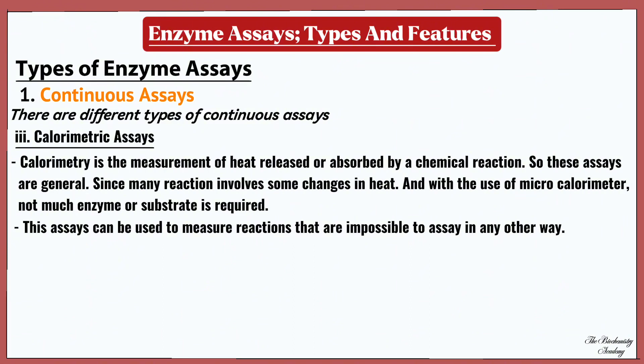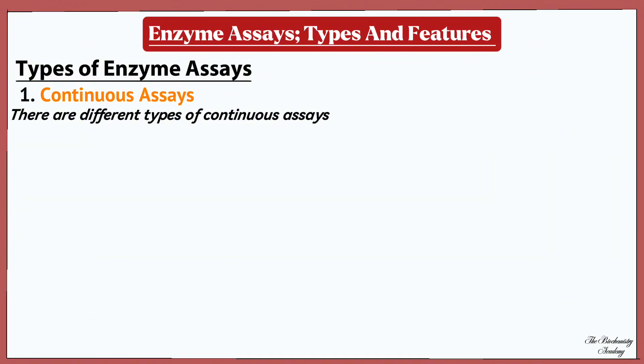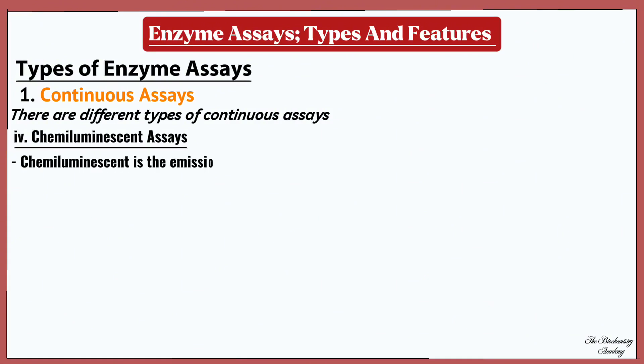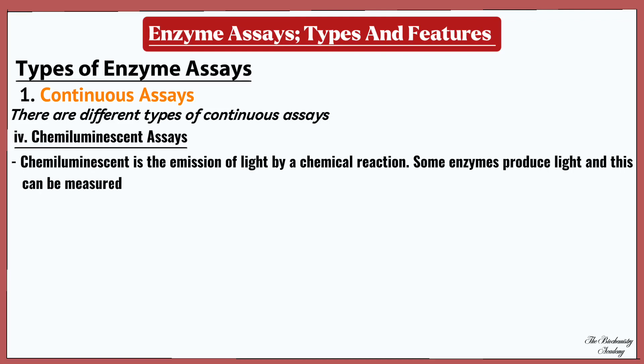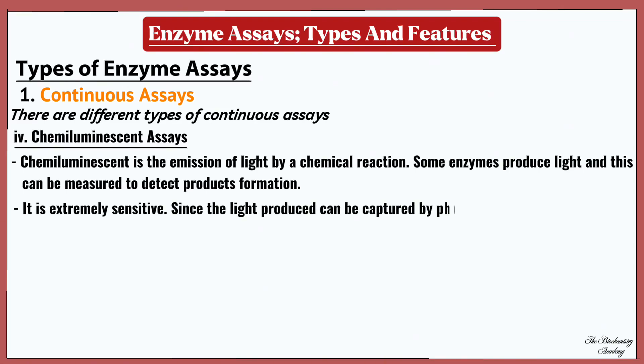The next type of continuous assay is the chemiluminescent assay. Chemiluminescence is the emission of light by a chemical reaction. Some enzymes produce light, and this can be measured to detect product formation. It is extremely sensitive, since the light produced can be captured by photographic films over days or weeks, but it can be hard to quantify because not all the light released by a reaction will be detected.